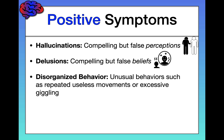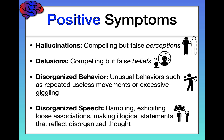We also see disorganized behavior — unusual behaviors such as repeated useless movements, excessive giggling, or extreme facial expressions. And finally, disorganized speech: rambling, exhibiting loose associations, which is a term used to mean rapidly shifting from talking about one thing to talking about something else, basically revealing disorganized cognition through what they're saying.